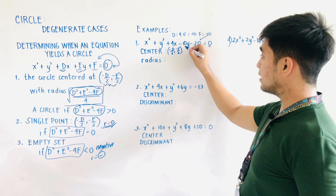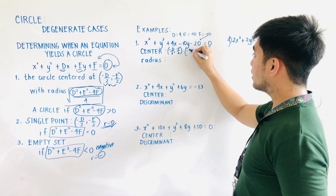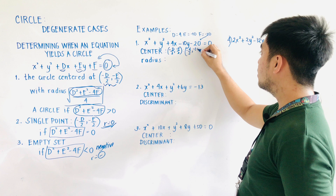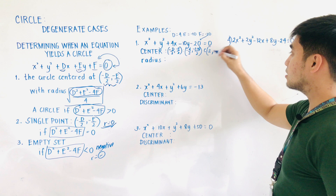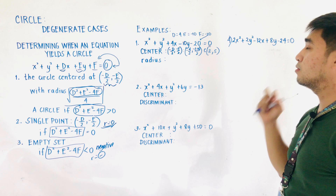Substituting the values of D and E into the center formula: negative D over 2 is negative 4 over 2, and negative E over 2 is negative of negative 10 over 2. Therefore, the center is located at negative 2, positive 5.